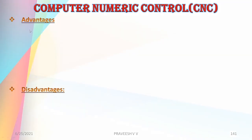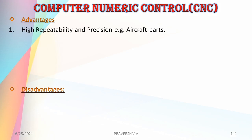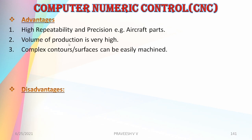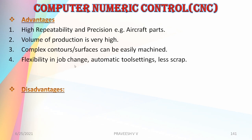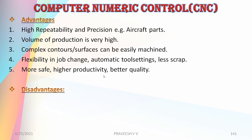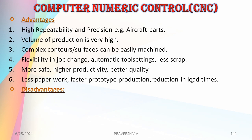Advantages of CNC include high repeatability and precision for complex parts, high volume of production because everything is automatic, and the ability to easily machine complex contour surfaces. Other advantages include flexibility in job change, automatic tool setting, less scrap, higher productivity, better quality, improved operator safety, less paperwork, faster prototype production, and reduction in lead time.